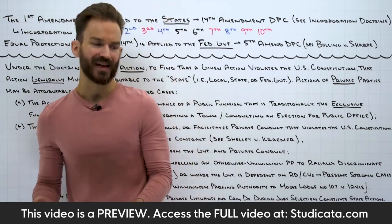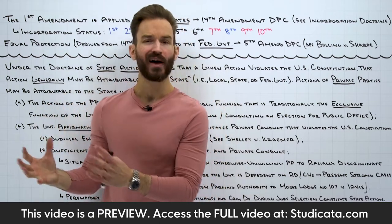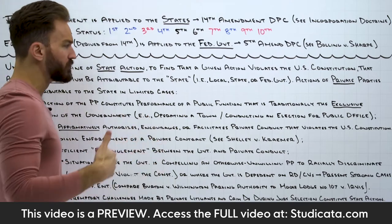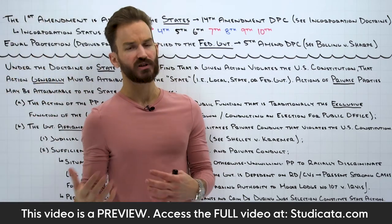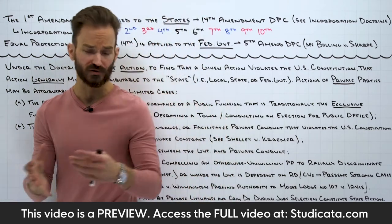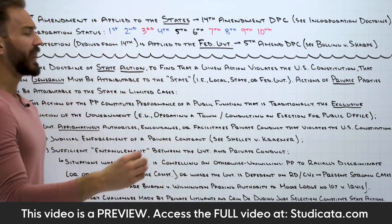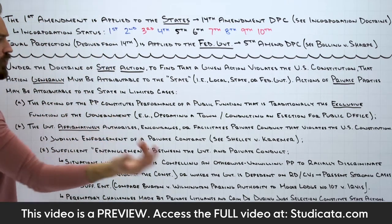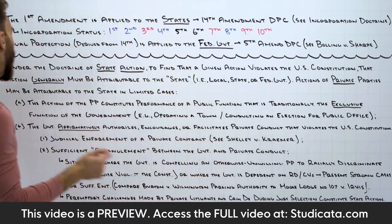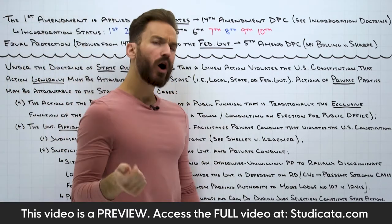The doctrine of state action as a concept, as a whole, is a really simple idea. We'll see the application of this can become really complex. In certain situations, it can become even contradictive or paradoxical. But as a big picture idea, it's pretty straightforward. To find that a given action violates the U.S. Constitution, that action generally must be attributable to the state.